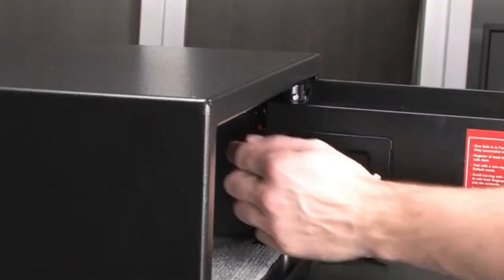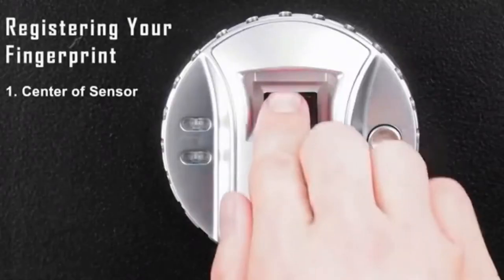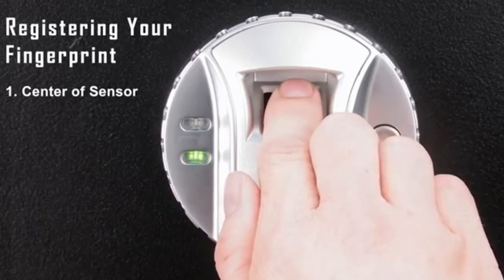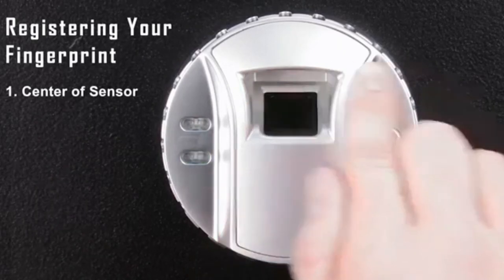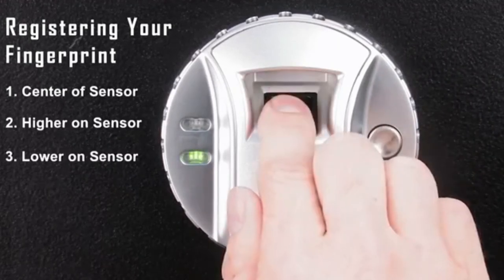To properly program your biometric security safe, press the red button and place your finger properly at the center of the fingerprint scanner. This will save the fingerprint to the biometric module. Next, scan your finger higher on the sensor, lower on the sensor,